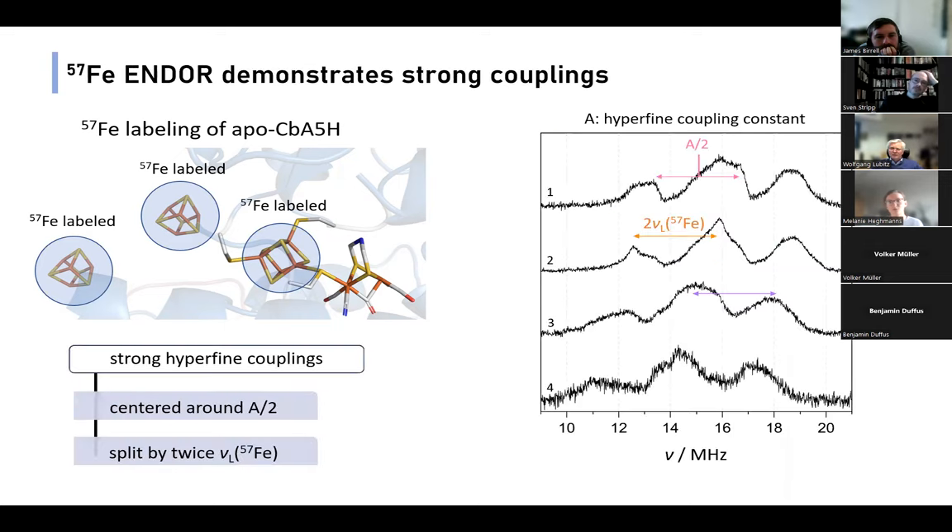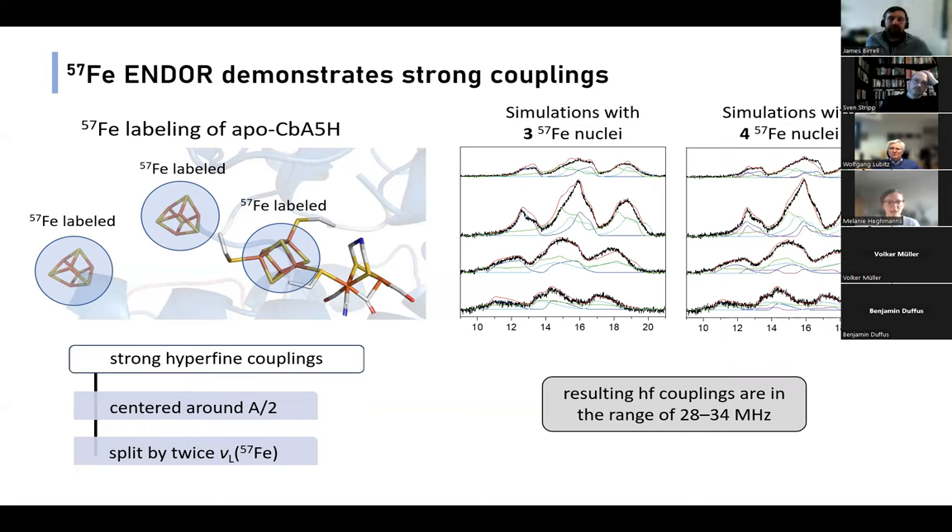Next, to gain more information about this interaction, we performed orientation-selective ENDOR at four different positions. We could detect three broad features symmetrically centered around the hyperfine coupling constant A over two and split by twice the Larmor frequency. To simulate these ENDOR spectra, we had to take into account either three or four 57Fe nuclei. However, the features are not very well resolved at Q-band frequencies, so it has some uncertainty. Nonetheless, all the resulting hyperfine coupling values are in the range of 28 to 34 megahertz.